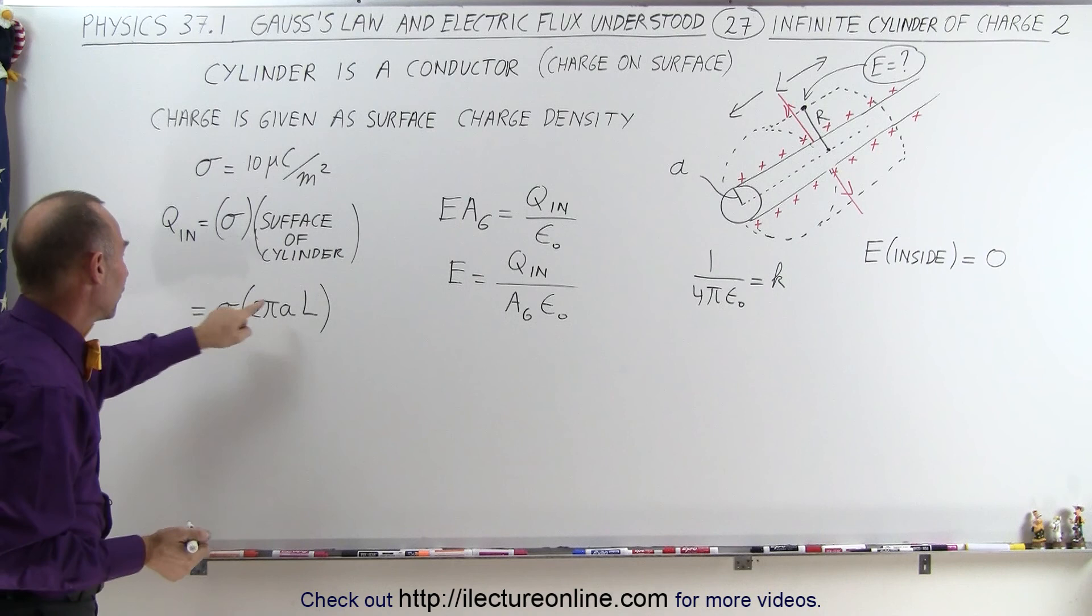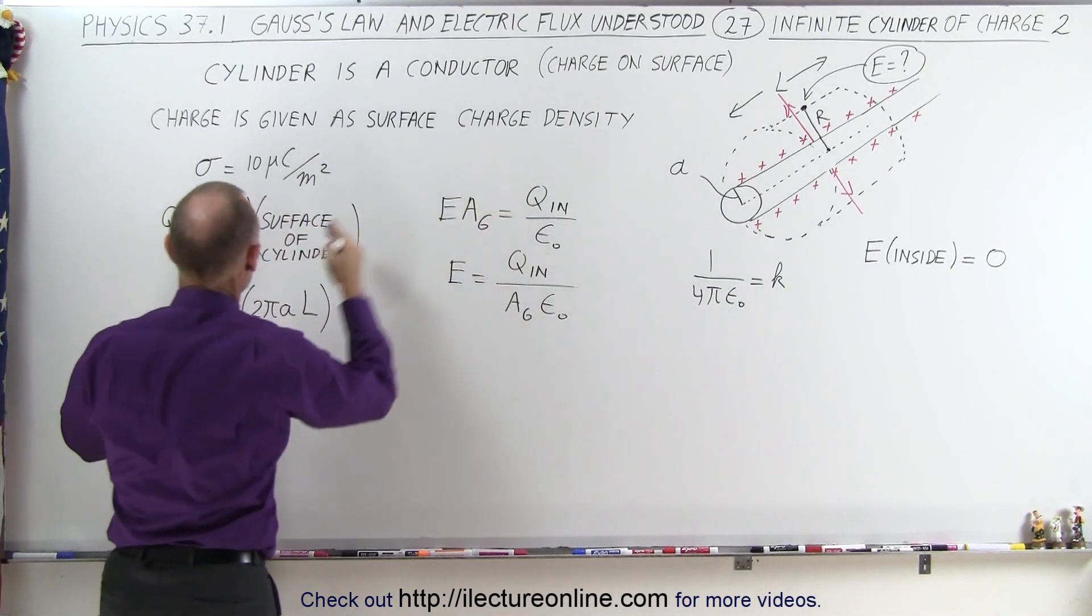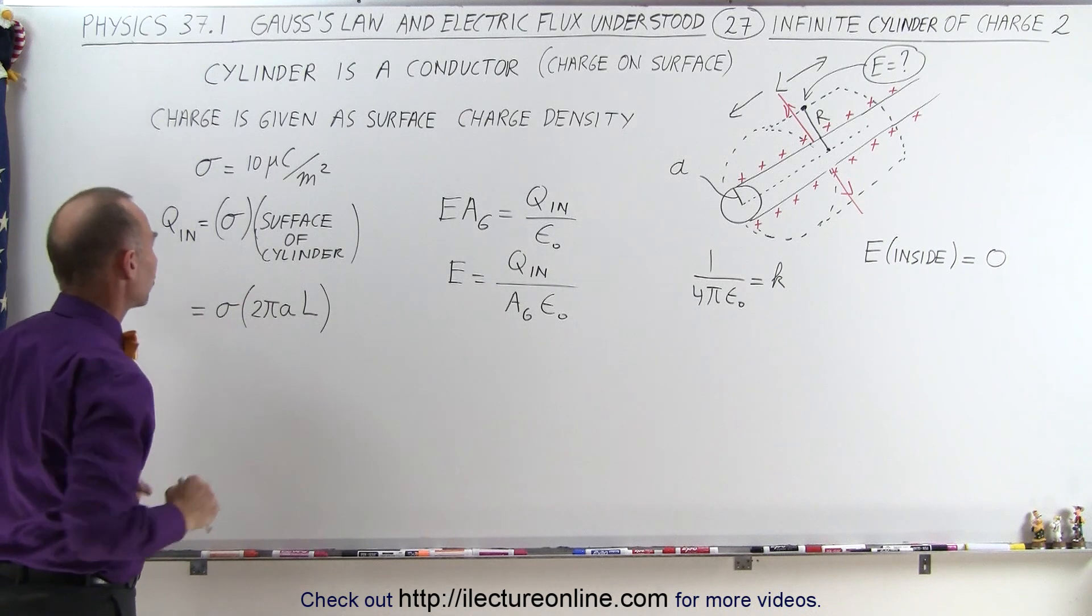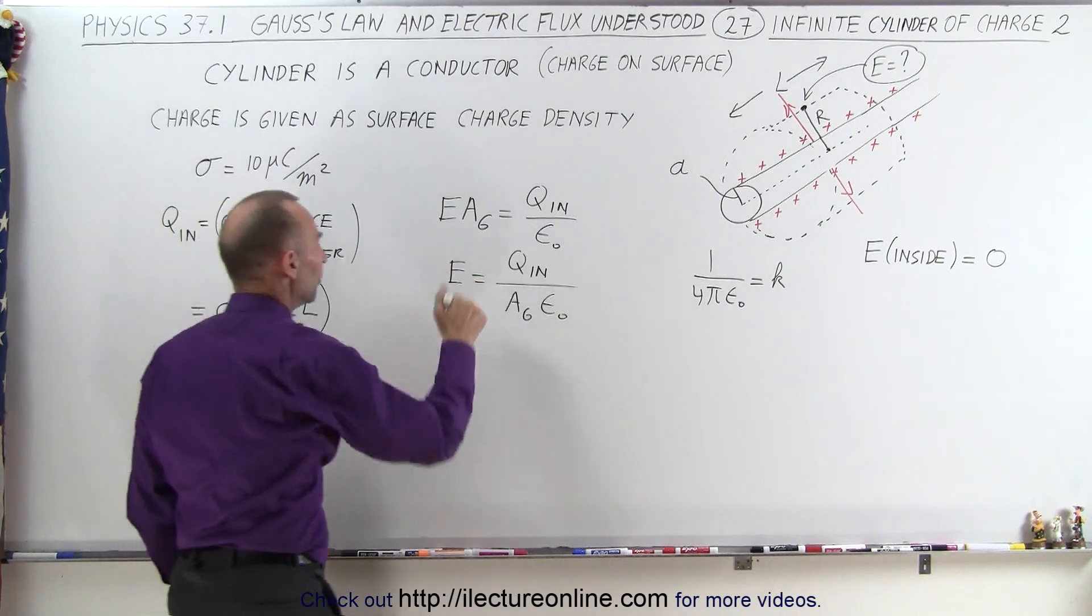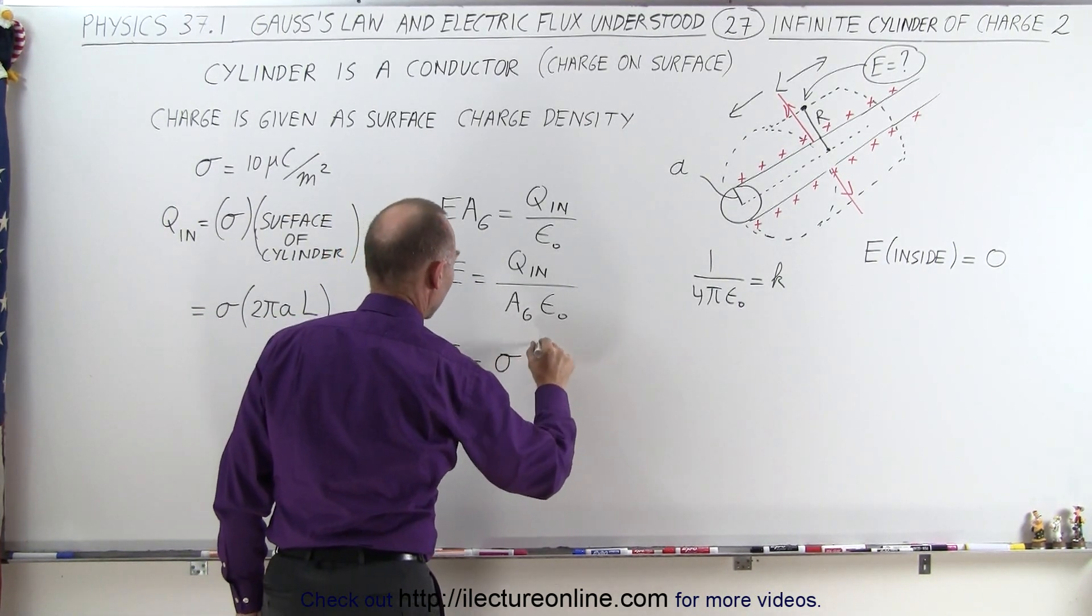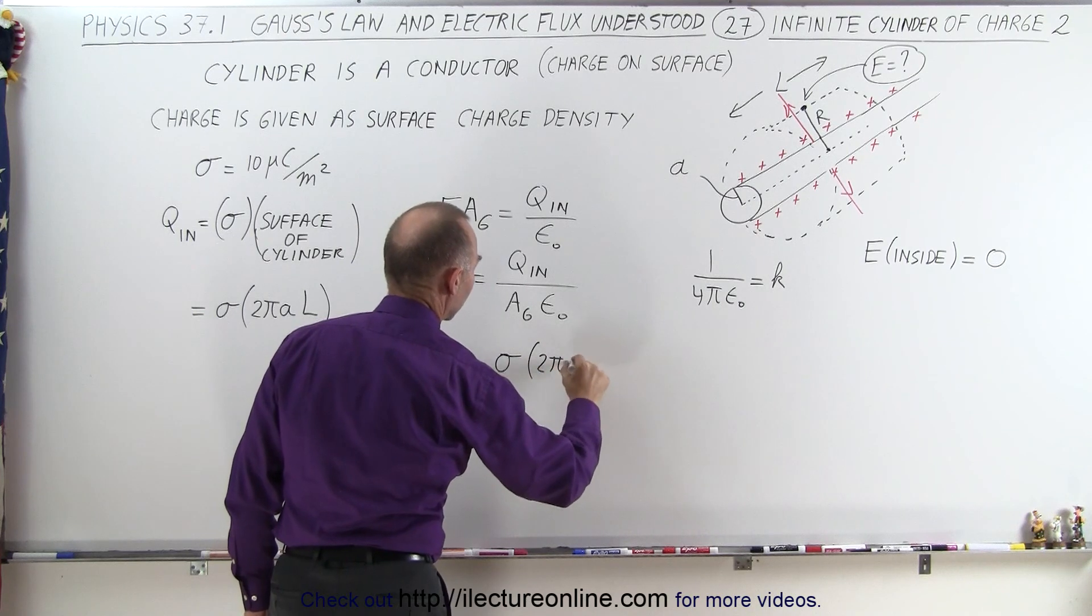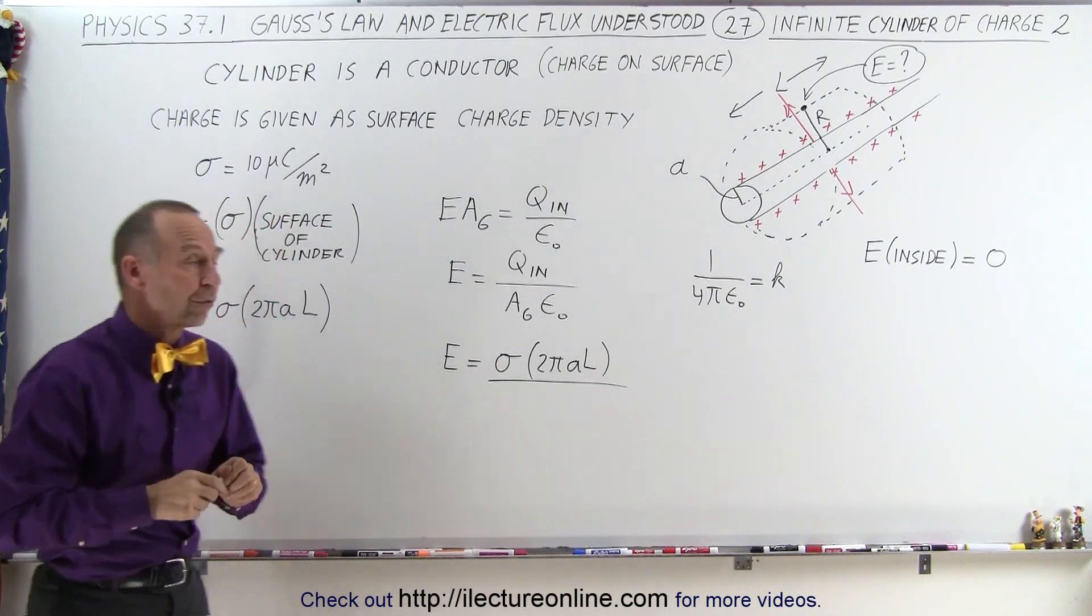So that will be the surface area of the cylinder that carries the charge on the outside. That's the surface times what we call the surface charge density, multiply the two, that gives you the charge inside the Gaussian surface for the length L. That goes in the numerator.